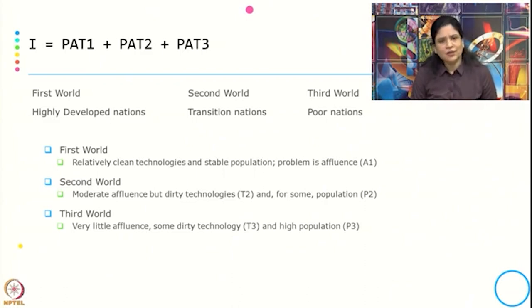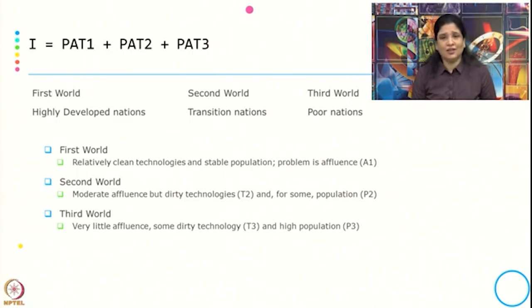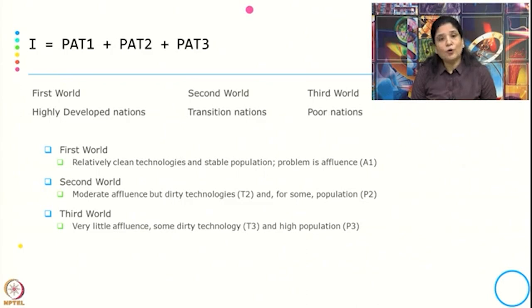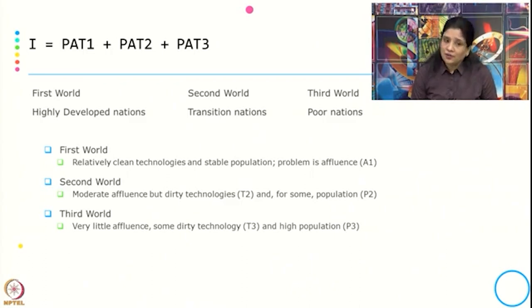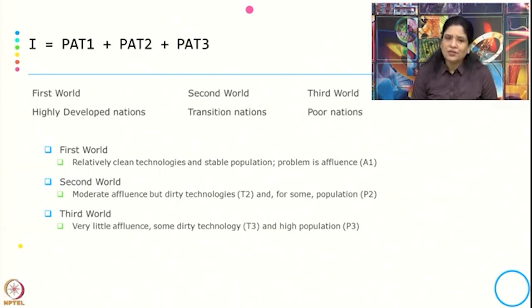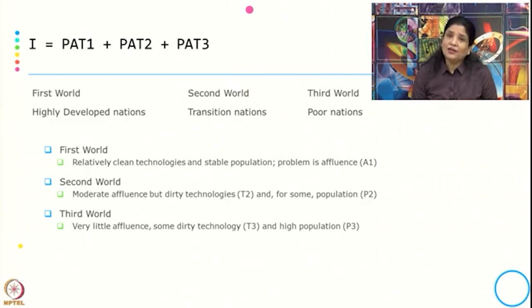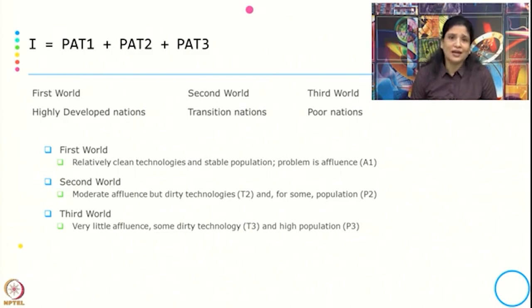Why is affluence less in the third world? Because income is less. Why is there only some dirty technology? Because there are not a lot of activities happening in the third world, but the population is high. So if you look at the impact from all three groups: for developed nations the impact comes from affluence; for the third world the impact comes from population; and for the second world, some part is from population, some from affluence, and technology is the biggest driver.